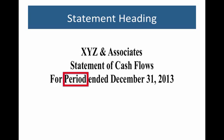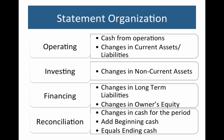First, with any statement you have your statement heading, which includes the company name, the name of the statement — which is the statement of cash flows — and in this case it's for a period of time. The statement of cash flows is organized in a very specific way. There are three main sections: the operating, investing, and financing section. And at the very end, there's our reconciliation.